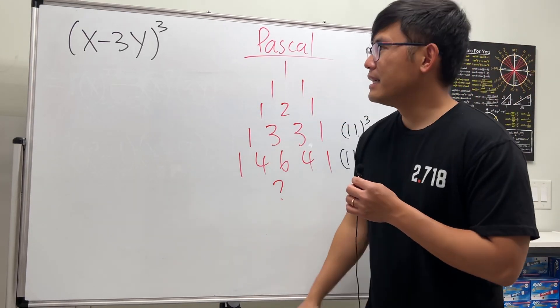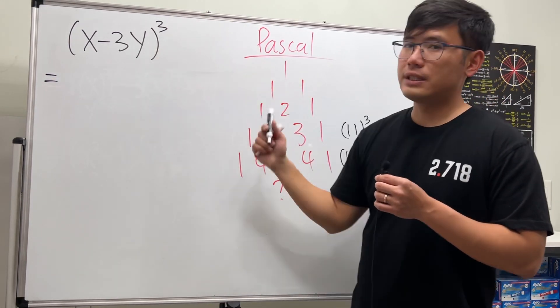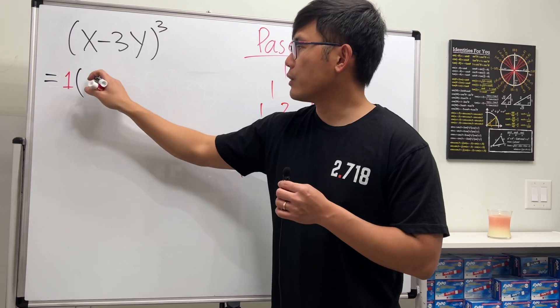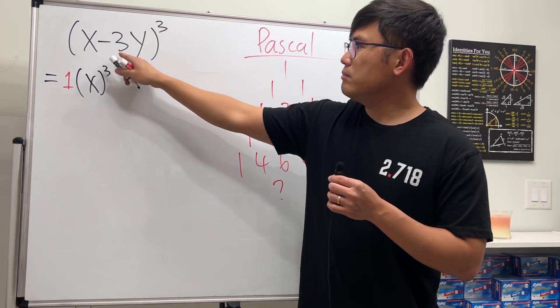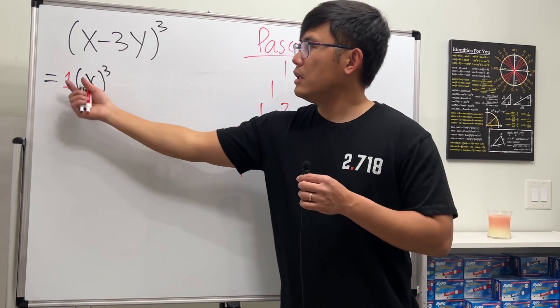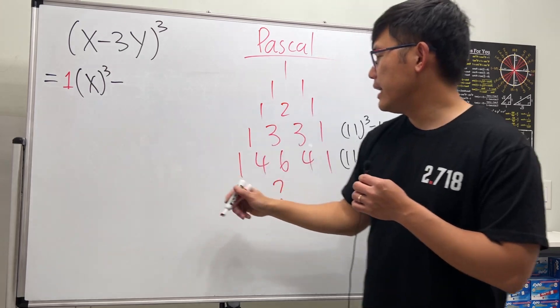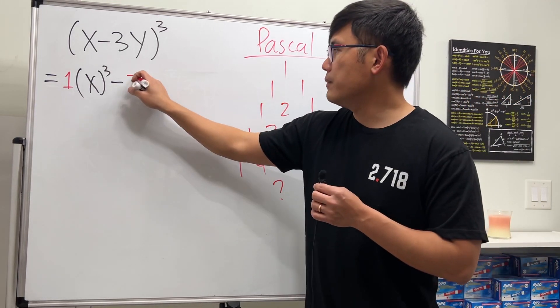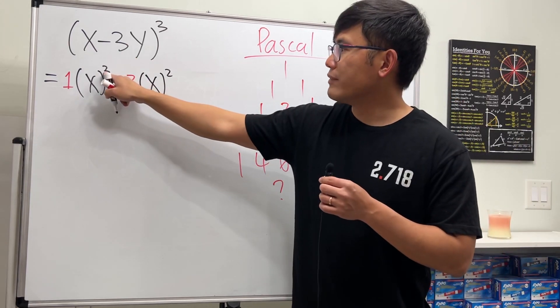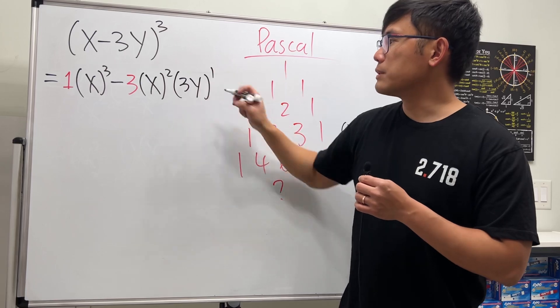Okay, now we know the coefficients. We start with one. So the first coefficient is one times this term to the third power, so we have x to the third power, and we don't have the three y, just leave it. Next, because we have a minus here, we are going to alternate the signs. This is positive, the next time it will be negative. And then we need to multiply three for the coefficient here, and then we take x raised to the second power because you have to drop the power by one. And then you will put 3y to the first power.